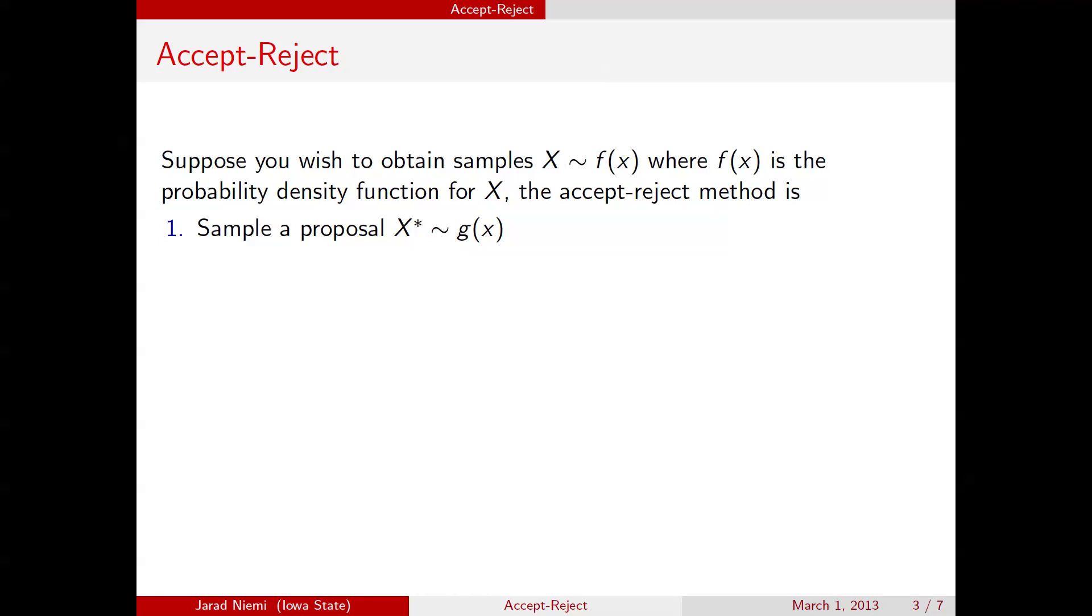From that distribution, we're going to call that x star. We're also going to sample a uniform 0, 1 random variable and call it u.